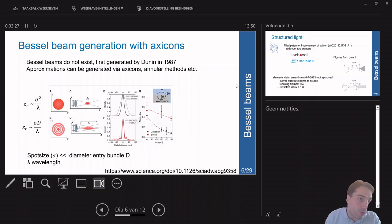For the Rayleigh range of a normal Gaussian beam, that is proportional to the spot size squared divided by the wavelength. With the axicon, you don't square the spot size but multiply by the diameter of the entry bundle. Because that's much longer than your spot size, you will have a longer focal length, which can be very advantageous.